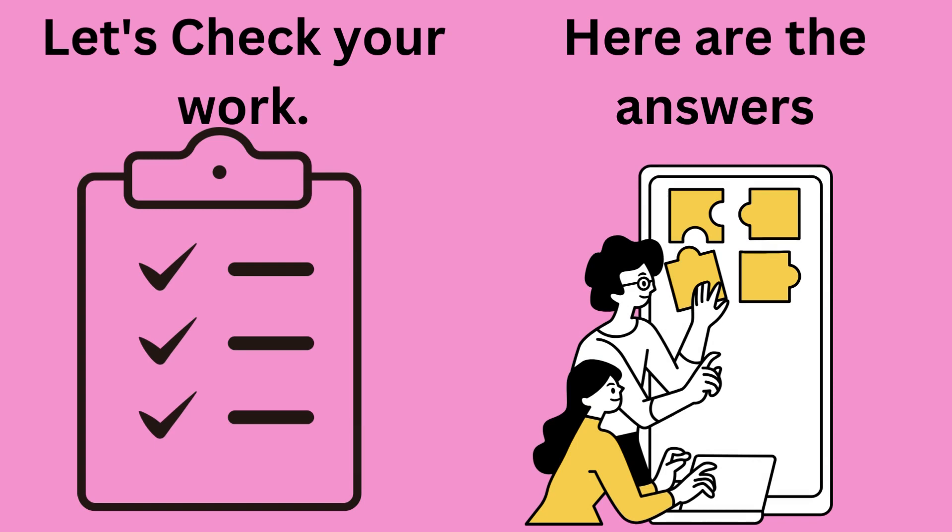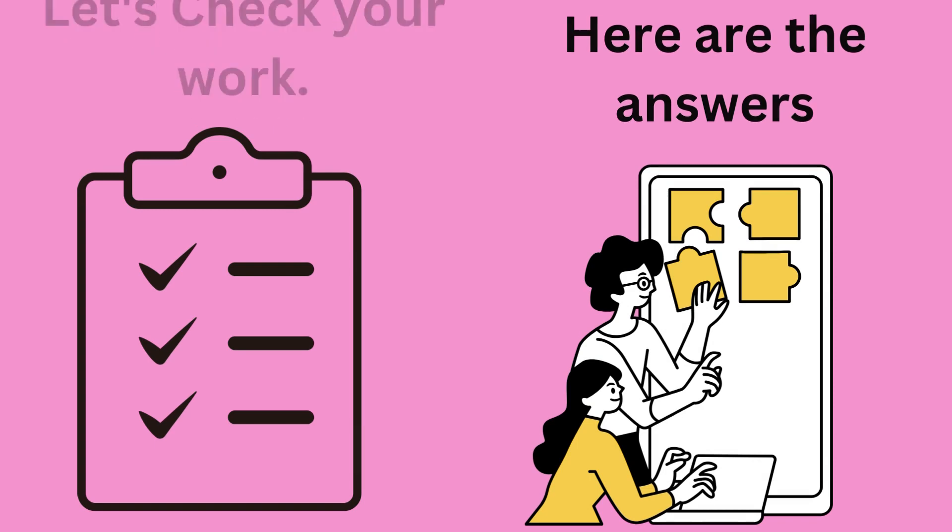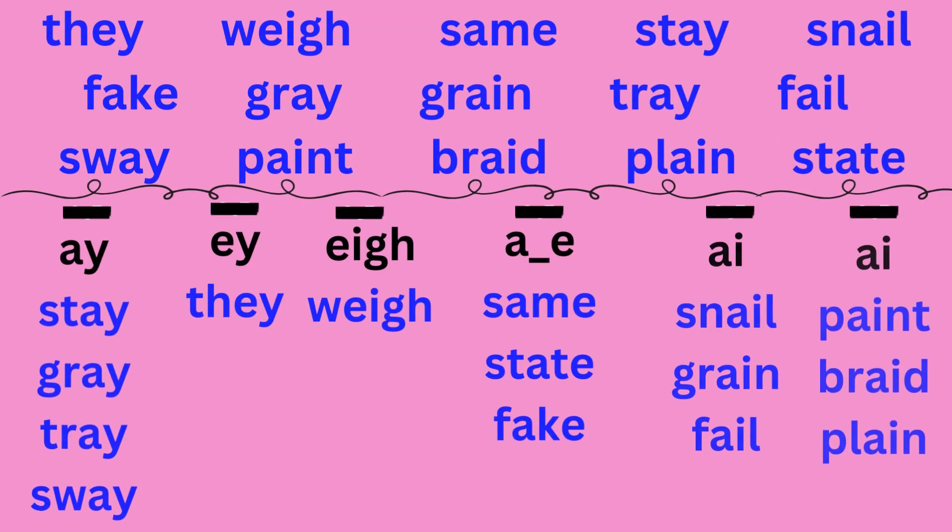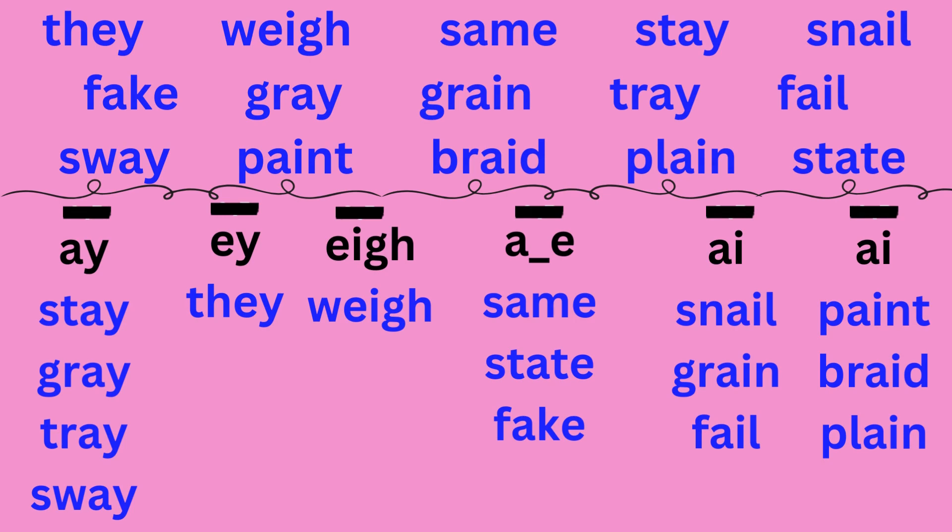Now let's check your answers and see how you did. The words in the A-Y column are stay, gray, tray, sway. The words in the E-Y column are they. The words in the E-I-G-H column are way. The words in the A with final E column are same, state, fake. The words in the A-I column are snail, grain, fail, paint, braid, plane.